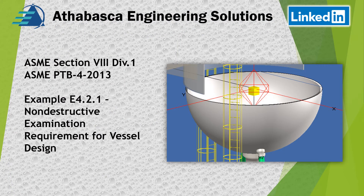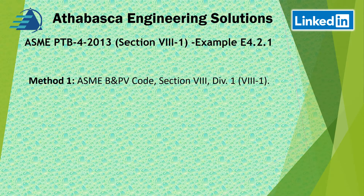Welcome back, folks. We're going to look at ASME PTB-4 2013 edition. In this example, we're going to be looking at a circumferential weld between a shell and a hemispherical head. It's going to cover non-destructive examination requirements as per Section 8, Division 1. I've increased the scope of this example and expanded on it with more commentary.